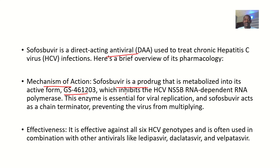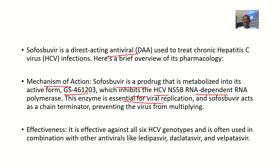The active form is known as GS461203. This active metabolite inhibits the Hepatitis C virus NS5B RNA-dependent RNA polymerase, which is an important enzyme essential for the virus to replicate — that is, to make many copies of itself.